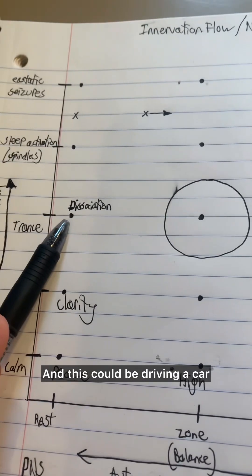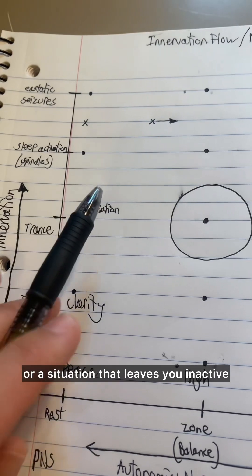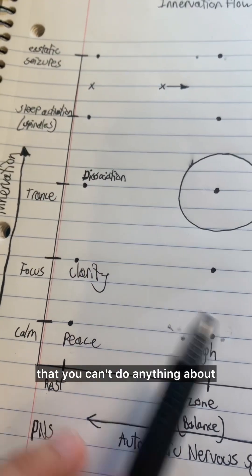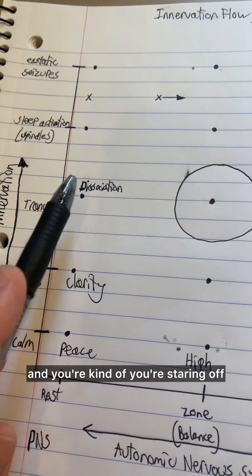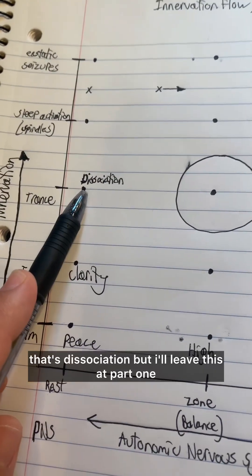And this could be driving a car. This could be watching TV. This could just be focused on something or a situation that leaves you inactive that you can't do anything about and you're kind of staring off and you're lost in your visual system. You're in a trance. That's dissociation.